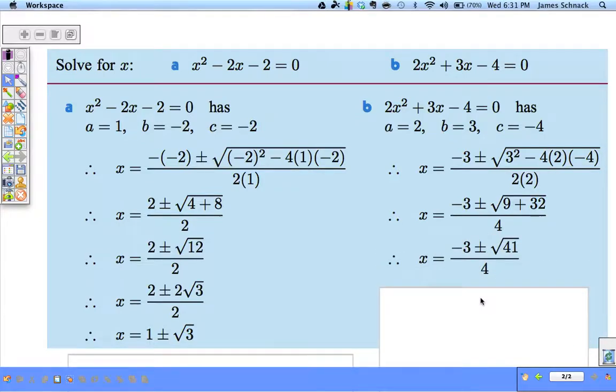So, we have negative 3 plus or minus the square root of 41. Are there any perfect squares that go into 41? No, there aren't. The square root of 41 cannot be simplified. This is the best exact answer that we can give.